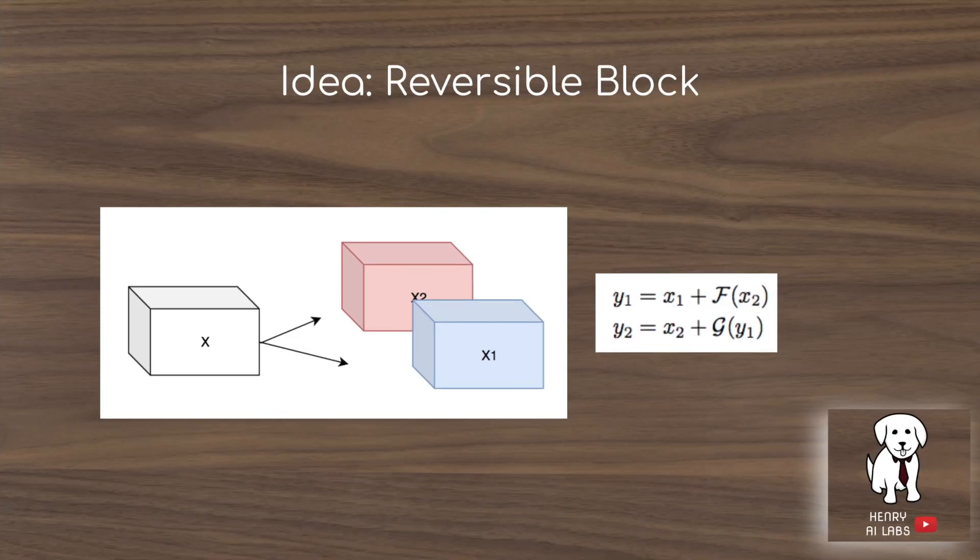Here's the idea of the reversible block. You split the input x into two inputs x1 and x2 along the channel dimension, and then y1 and y2 are also divided in this way, and they're constructed from each of the x1 and x2.